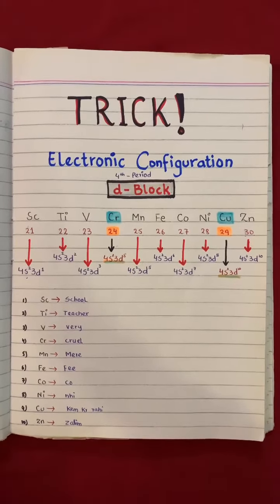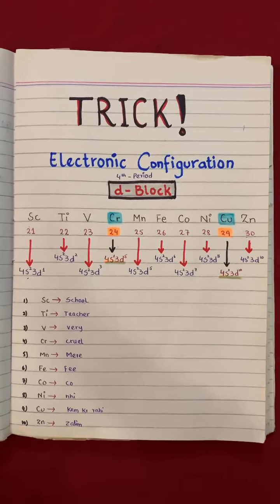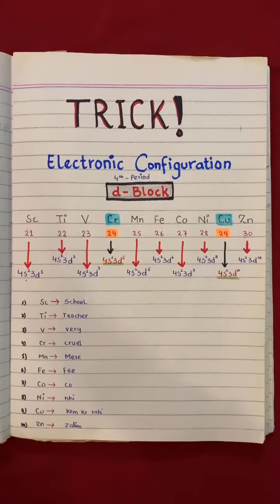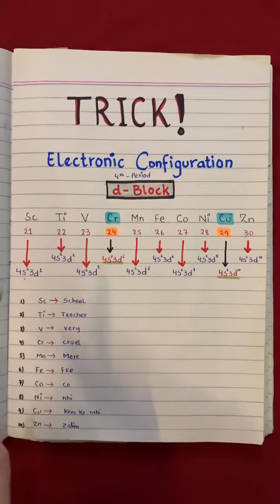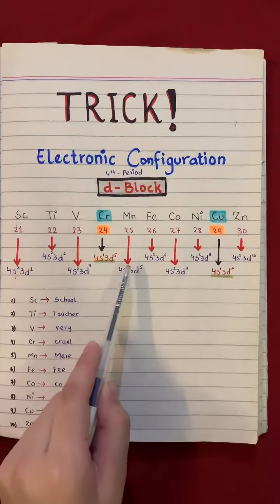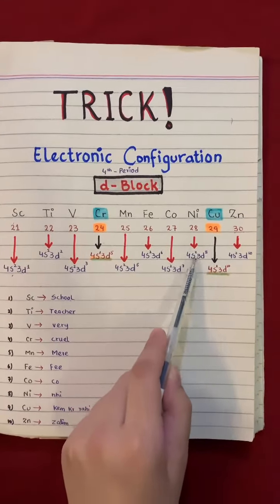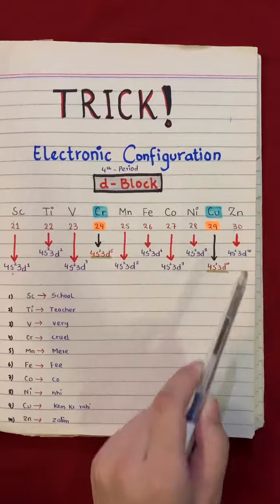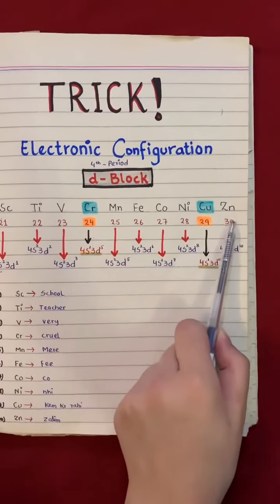Present in the first row are scandium, titanium, vanadium, chromium, manganese, iron, cobalt, nickel, copper, and zinc. The trick is: School Teacher Very Cruel, Mere Fee Ko Nahi Kam Kar Rahi Zalim. And atomic numbers are mentioned just below the symbols of the elements.